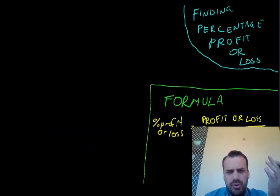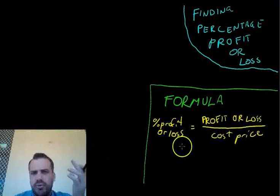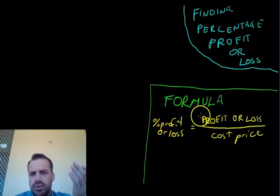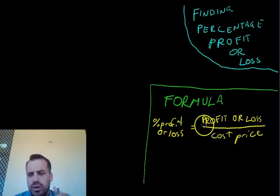Important formula here. I'll just move my head out of the way. Percentage profit or loss is equal to the profit or loss in dollars divided by the cost price. That's the thing that you bought it for.